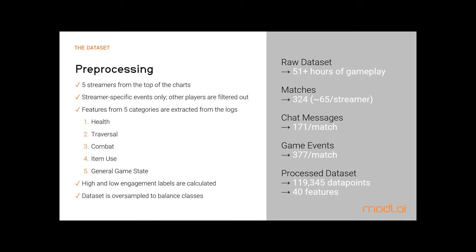Our models derive high and low engagement labels using two parameters: the classification threshold and an uncertainty bound. We chose five popular streamers with enough viewer count to reliably train our models. We extract 40 features from the detailed game logs of PUBG, focusing mainly on the streamer's data, covering aspects of health status, traversal, combat events, item usage, and the general state of the game. This gives us a large dataset of 324 matches and around 120,000 data points. We employ neural networks, tuning the models for learning rate, hidden nodes, and dropout rate, resulting in small but efficient models.